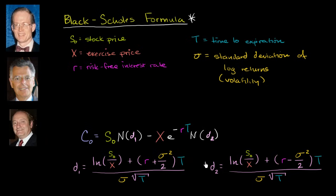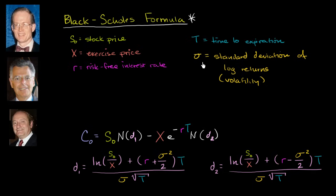Before we dive into this seemingly complex formula — though hopefully it'll start to seem a lot friendlier — let's get an intuition for the things we would care about when thinking about the price of a stock option. You would care about the stock price and the exercise price, especially how much higher or lower the stock price is relative to the exercise price. You would care about the risk-free interest rate, which keeps showing up when we think about discounting value back to today. And of course, how long do you have to actually exercise this option?